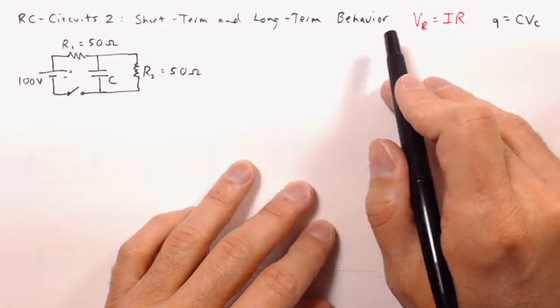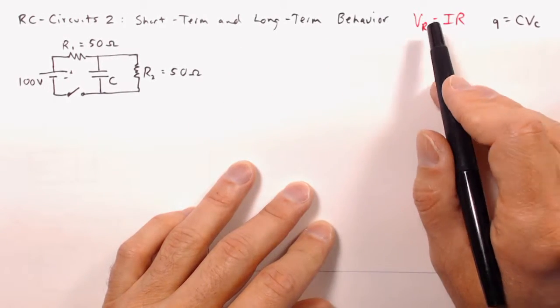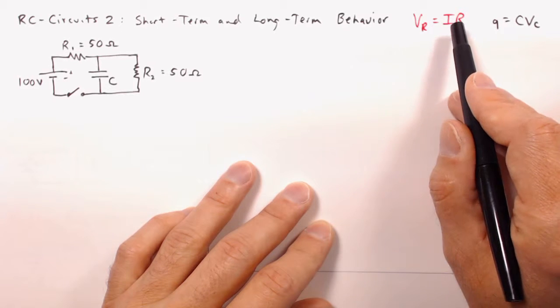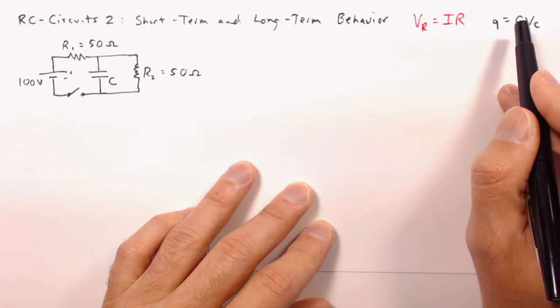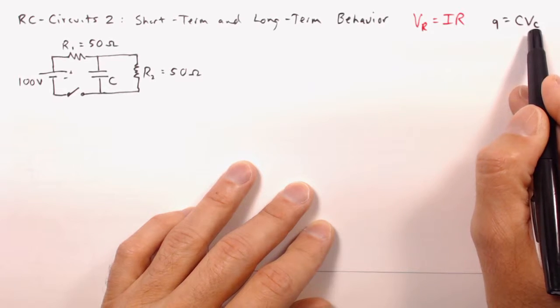I'm going to use a couple of formulas pretty regularly throughout this presentation. Of course, the voltage on a resistor is equal to the current times the resistance, and then the charge on capacitor is equal to the capacitance times the voltage on the capacitor.